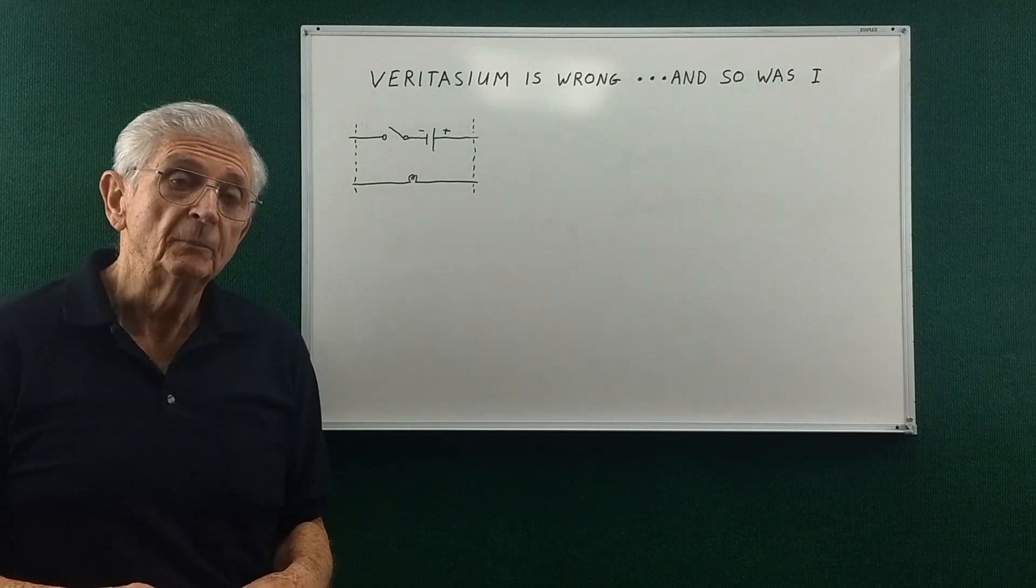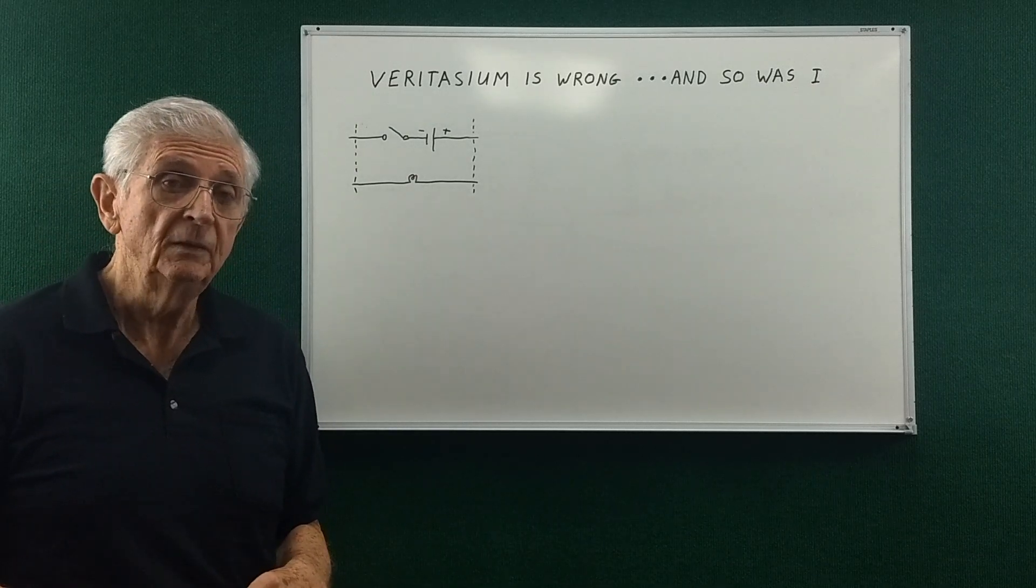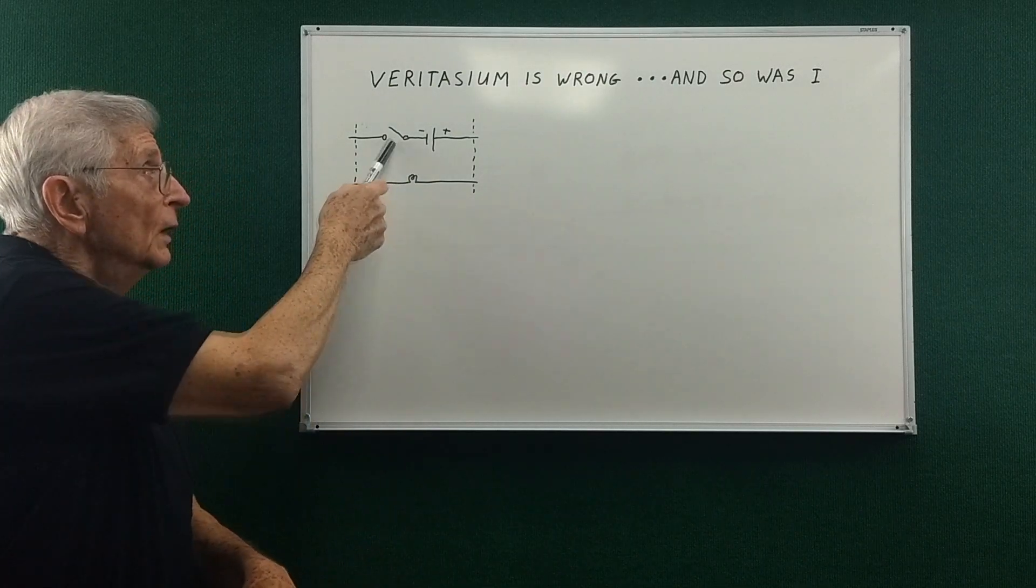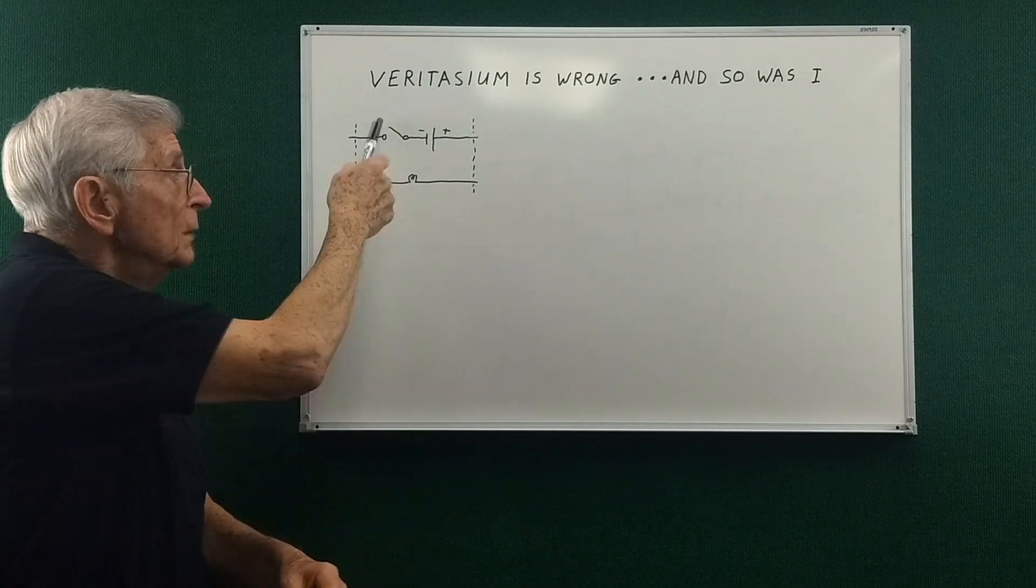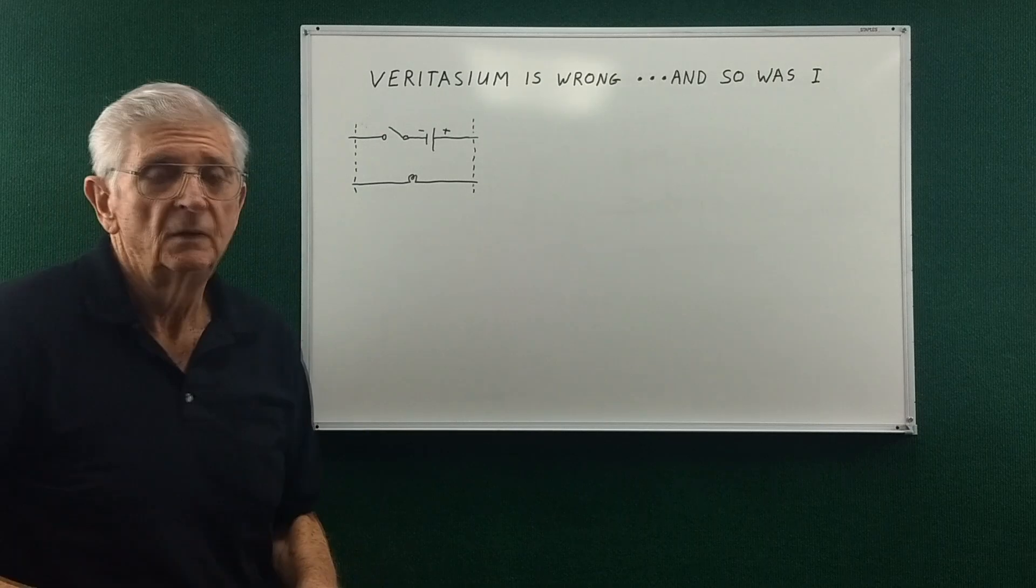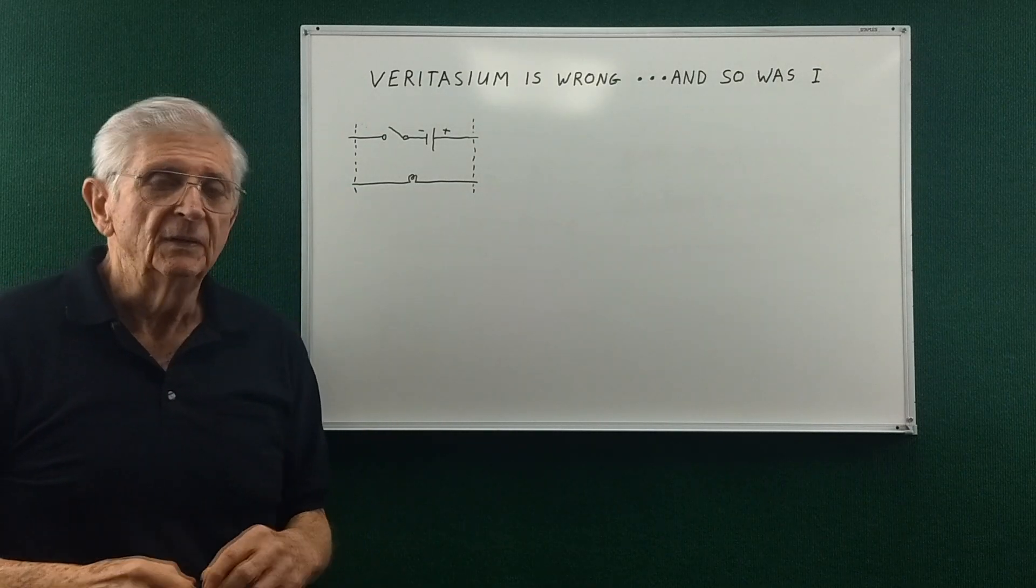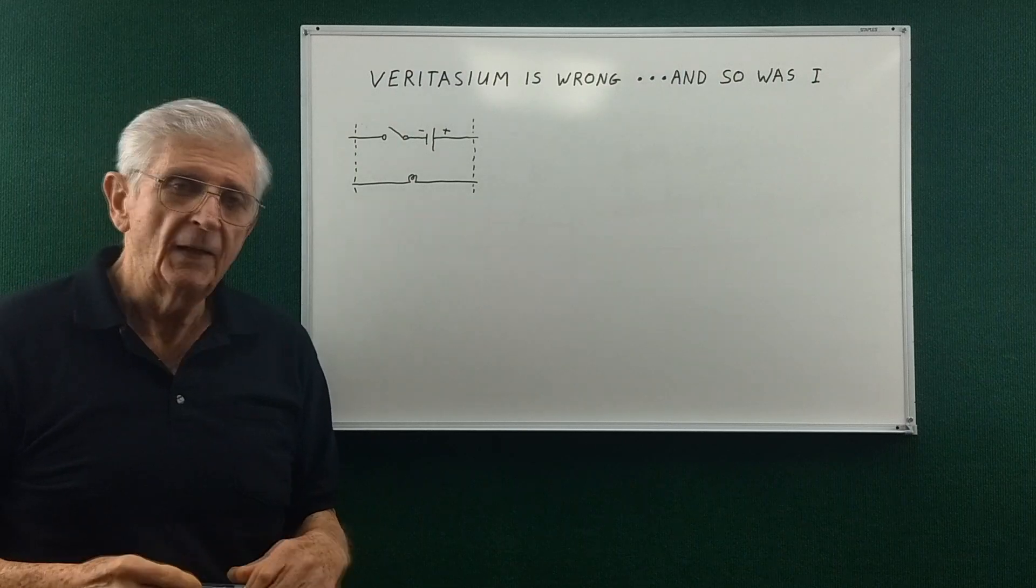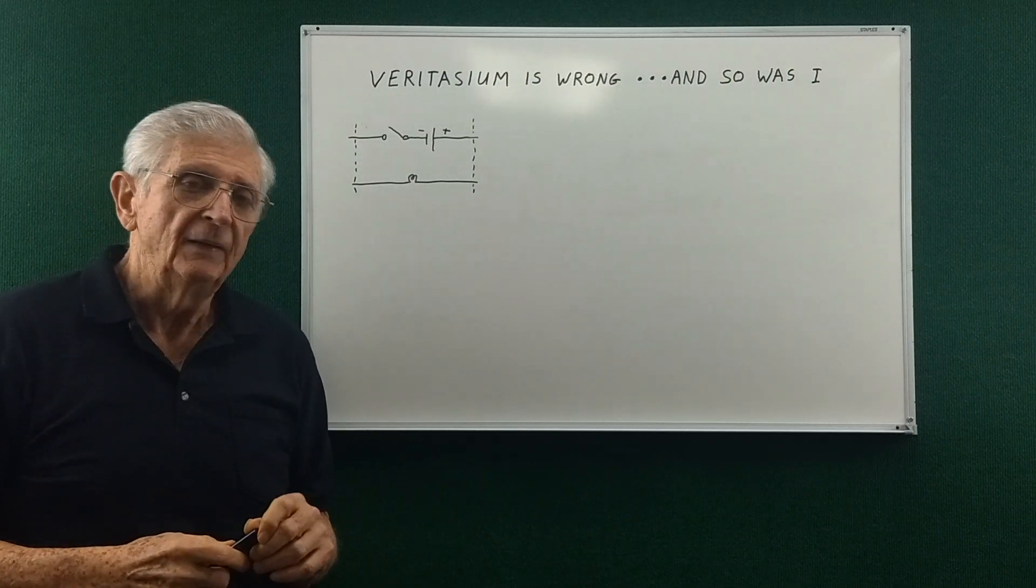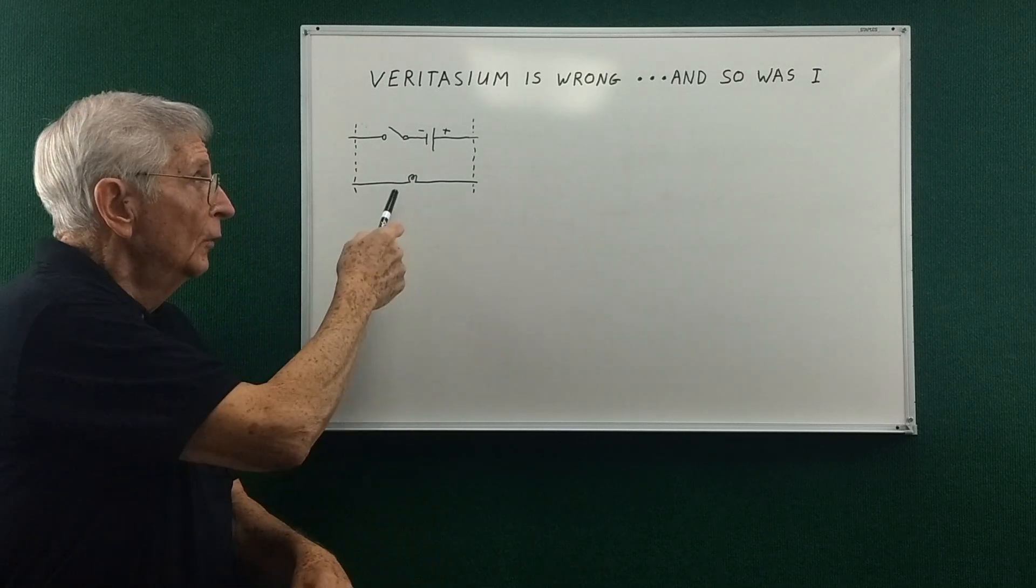Now Veritasium presented a question about the time to light a light bulb when a switch is thrown one meter away with very long wires out in each direction. And it was worded in such a way that it could be interpreted that if any current flows at all the light bulb would light.